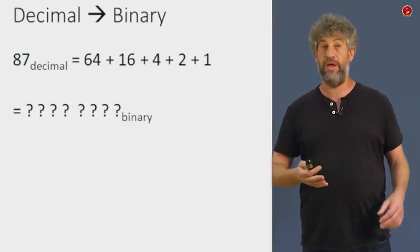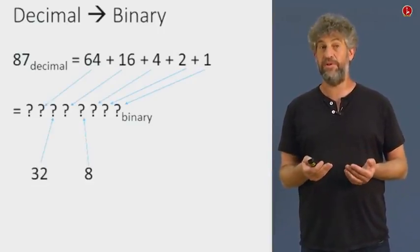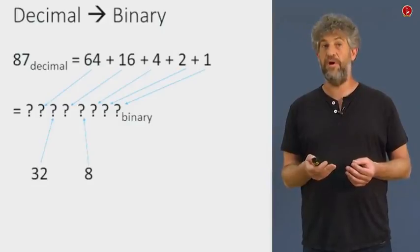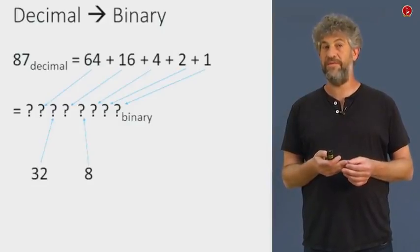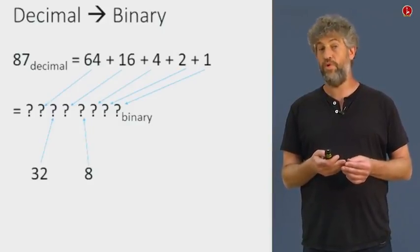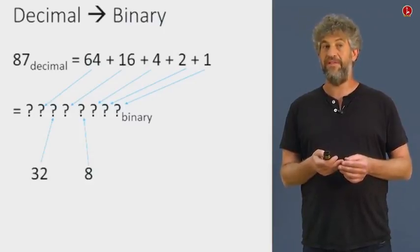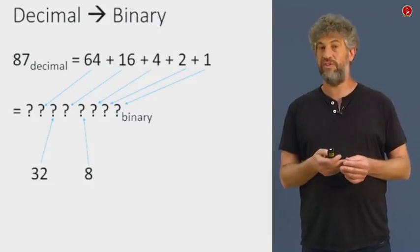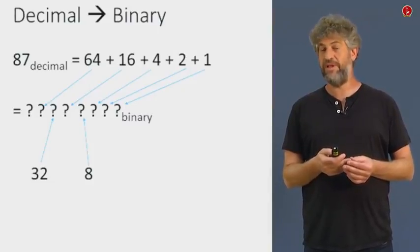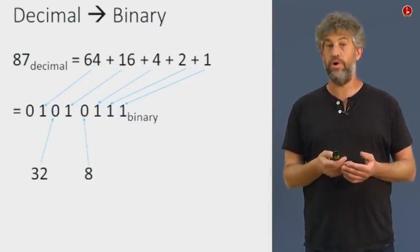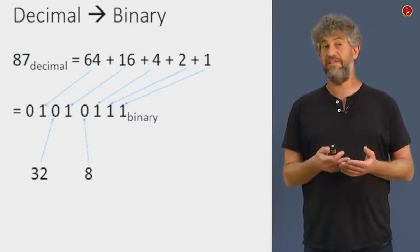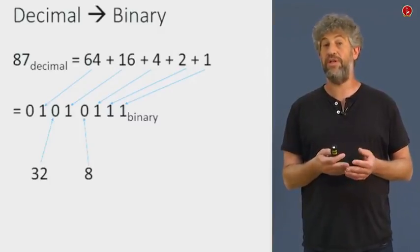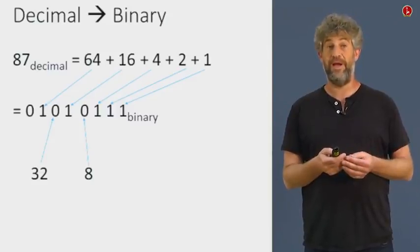And whenever the power is not part of the sum, we put a 0 there. So for example, look at the rightmost bit that corresponds to the ones. We do have a 1, so that's going to be a 1. On the other hand, if you look at the third bit from the right, which corresponds to the eights, since we don't have 8 in the sum here, we're going to have 0 there. And that's the general way you can take any number and convert it to binary.